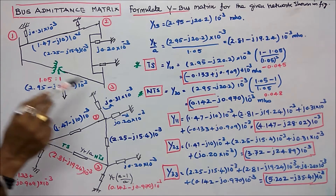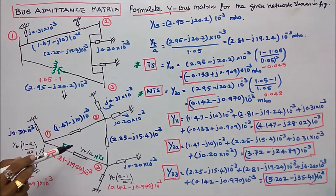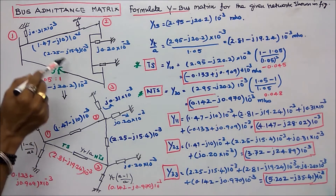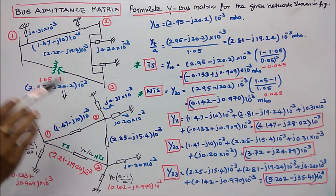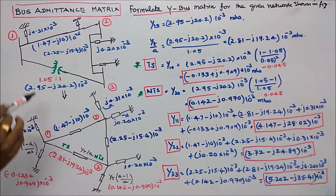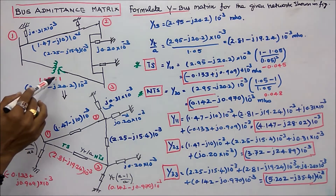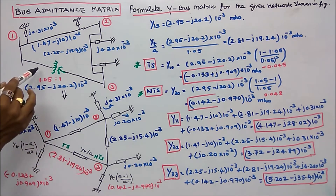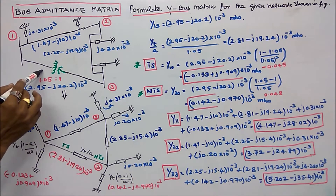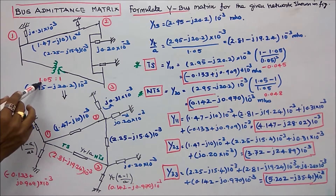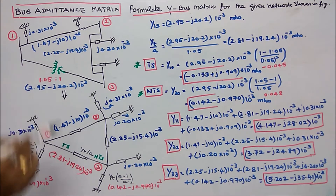In line 1-3, an off-nominal tap setting transformer is connected with a ratio of 1.05 to 1. This is the tap setting side and this is the non-tap setting side. Here A is equal to 1.05.